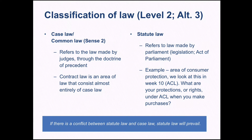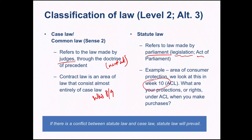Case law, or common law, is judge-made law that operates through the doctrine of precedent, which we'll cover next week. Contract law is an area mainly built on case law, covered in weeks eight and nine. Statute law is law made by parliament — also called legislation or an act. Consumer protection, covered in week ten, is an example of statute law. When we do negligence in weeks eleven and twelve, we deal with an area that uses both, giving you a sense of how common law, statute, and their interaction operate.